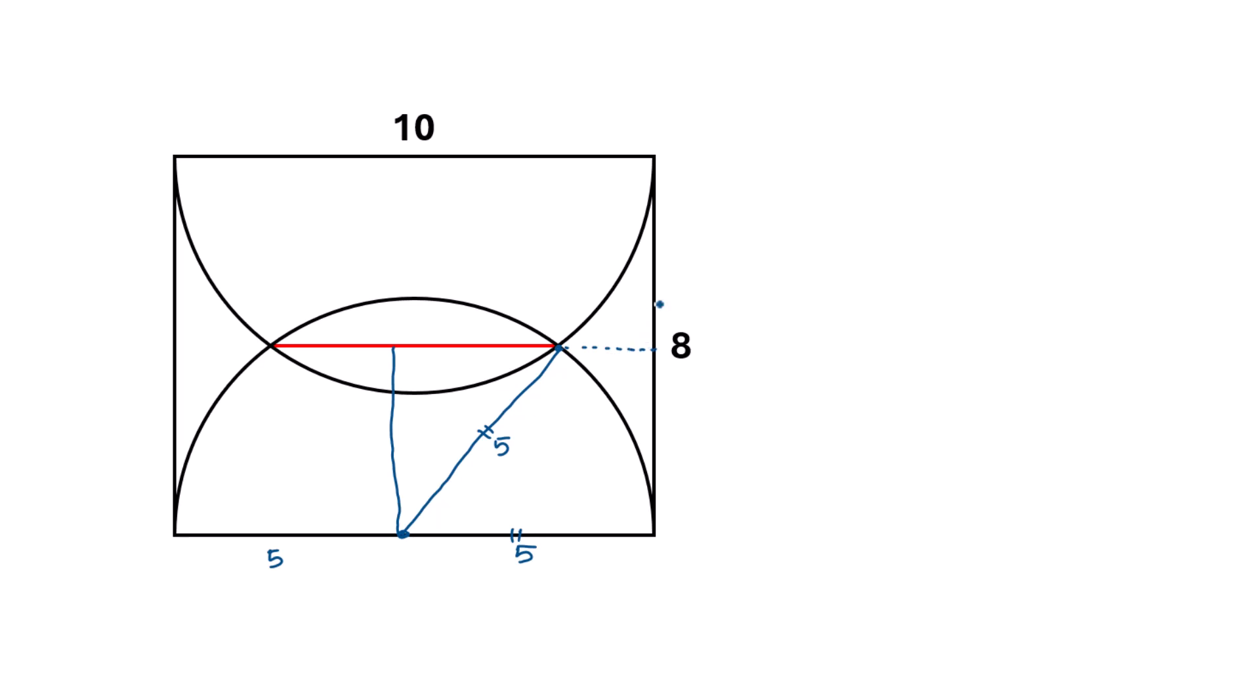This will intersect the width as two equal parts, so from this point to this line it will be 4 units and this will also be 4 units as the total width of this rectangle is 8 units. As this is 4, this length will also be 4 units.